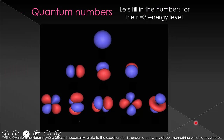Here are the pictures of the orbitals that we've been talking about. Let's fill in the possible quantum numbers for the N equals three level. Since N equals three, L is allowed to equal zero, one, and two. This means that the third energy level has S, P, and D orbitals.